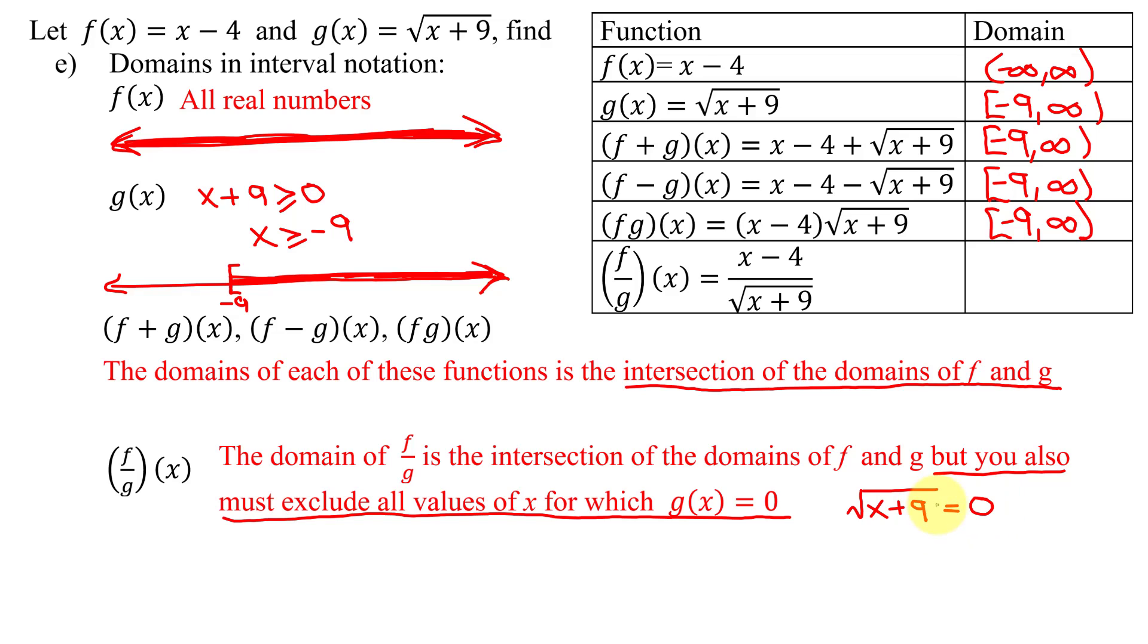Well, that equals 0 when x plus 9 equals 0 or when x equals negative 9. So I'm going to take the domain I found up here of negative 9 to infinity, but then I have to exclude x equals negative 9. Is negative 9 included in this domain? Yes, because there's a square bracket. So to exclude it, I will just turn this square bracket into a parentheses. So my answer will be parentheses negative 9 to infinity.